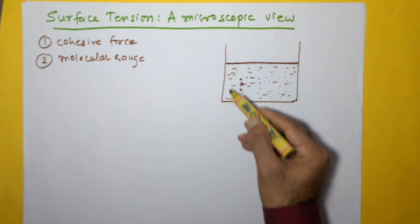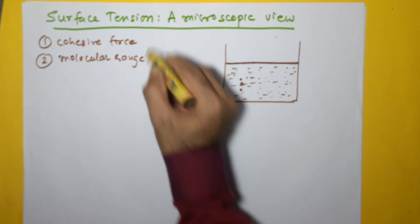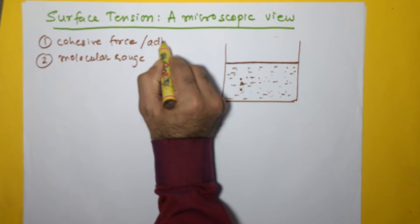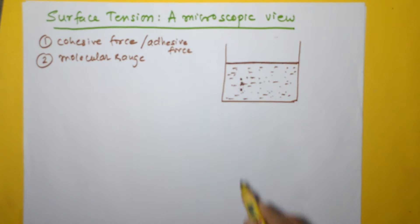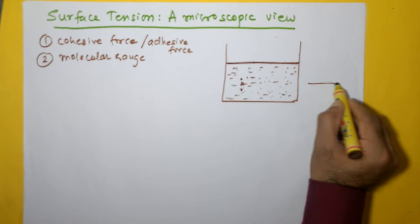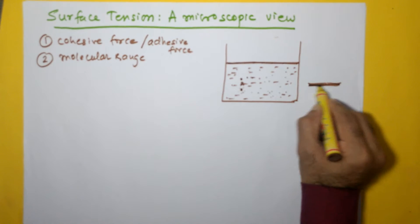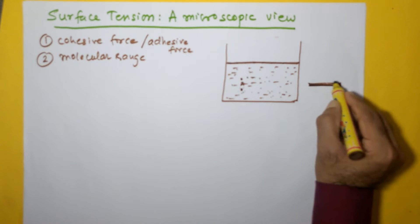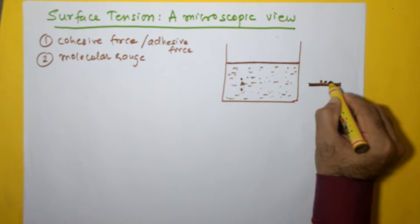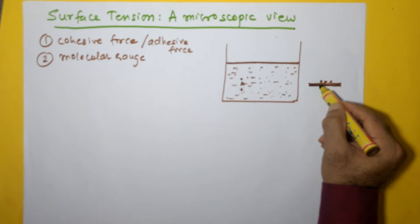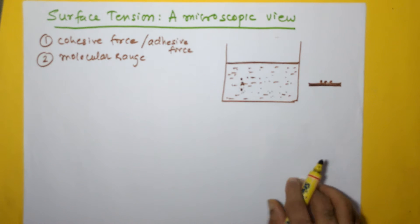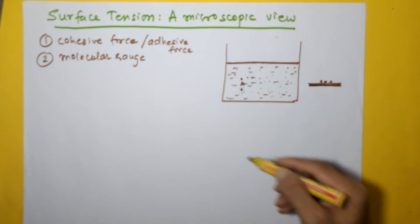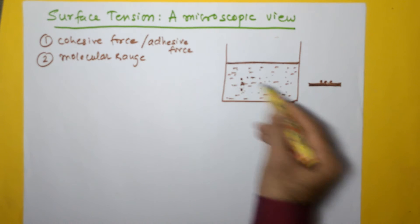The cohesive forces are the forces which come into play between molecules of the same substance. Adhesive force is the attractive force between molecules of different substances. For example, if I have a glass plate or a wooden plank and I pour water onto it, the force of attraction between the wooden plank and water is classified as adhesive force — two different substances. In this video, we are looking at cohesive forces between the molecules of water.